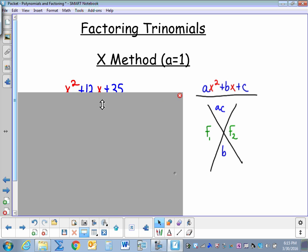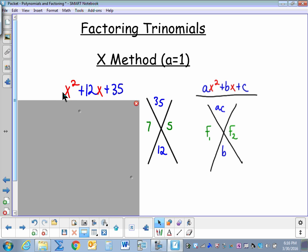So what does this look like? Here I have x squared plus 12x plus 35. a is 1, b is 12, and c is 35. So I draw my X and I multiply a times c and I get 35. And I write b which is 12 down here. And then I come up with factors of 35 that equal 12. 7 times 5 equals 35. 7 plus 5 equals 12.